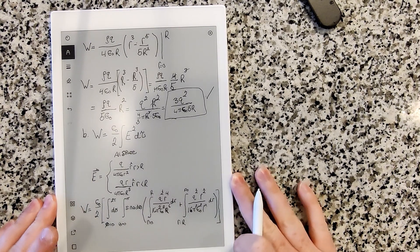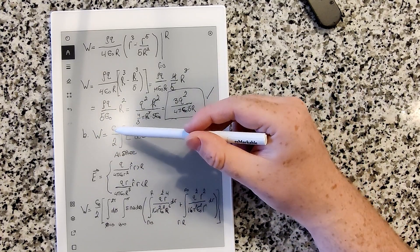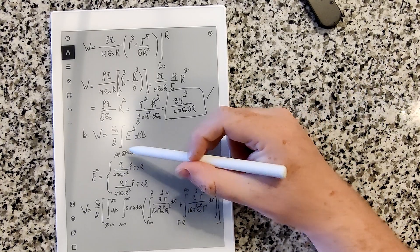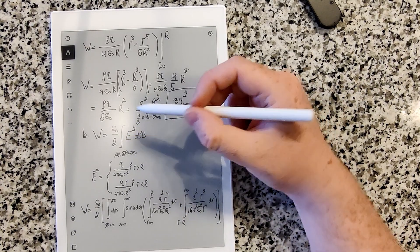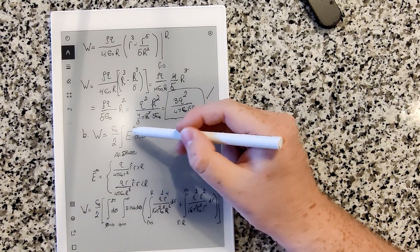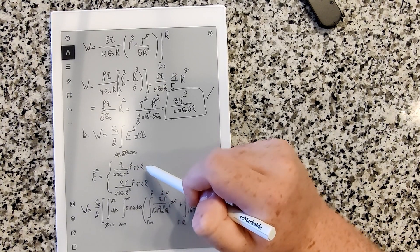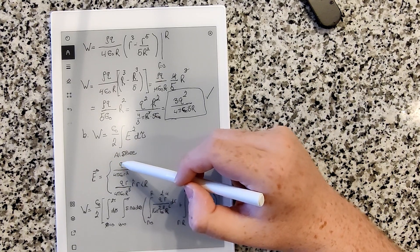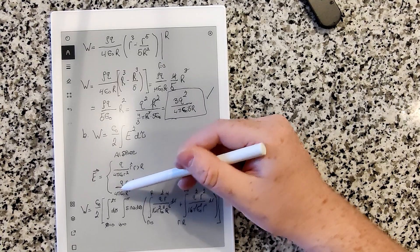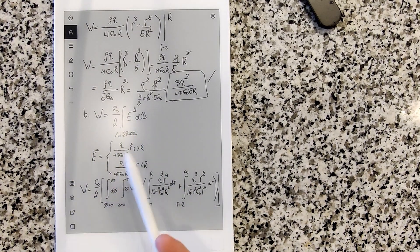There's another method using the equation W = (ε₀/2)∫E² dτ integrated over all space. Griffiths wants us to verify that we get the same answer regardless of which equation we use. For a uniformly charged solid sphere, the electric field has two regions: outside (r > R), E = Q/(4πε₀r²) r̂, and inside (r < R), E = Qr/(4πε₀R³) r̂.